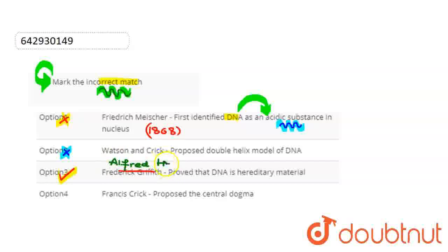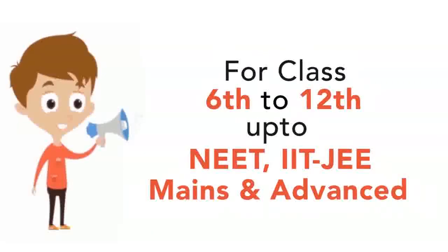After that, we will see the last option, which is Francis Crick. So this match is correct. In 1958, Francis Crick proposed the central dogma. Right? So this match is correct.